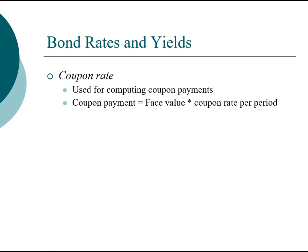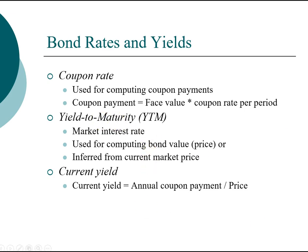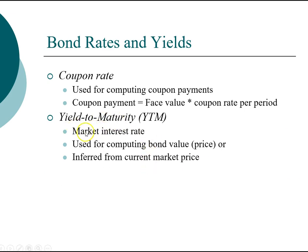As a reminder, the coupon rate is used for computing the coupon payment. When we want to compute the present value of future cash flows for a bond, we need a discount rate. The discount rate we use is called the yield to maturity. The yield to maturity is the market interest rate, and because it is a market rate it changes over time.